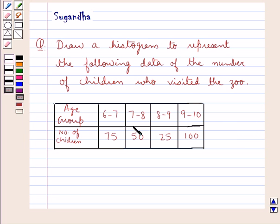For the age group of 7 to 8 years, the number of children who visited the zoo were 50. For the age group of 8 to 9 years, the number of children who visited the zoo were 25. And for the age group of 9 to 10 years, the number of children who visited the zoo were 100.